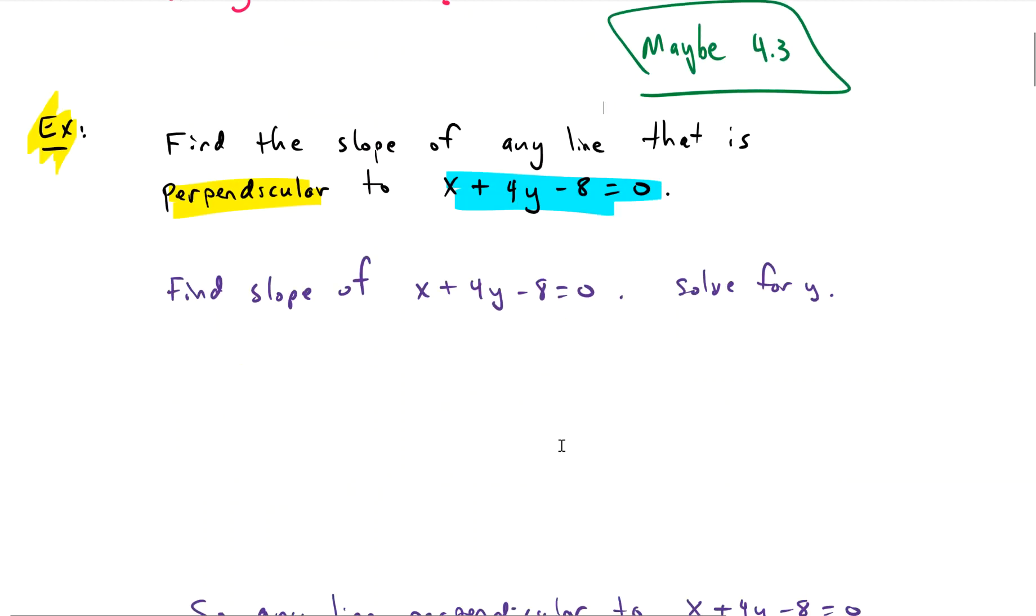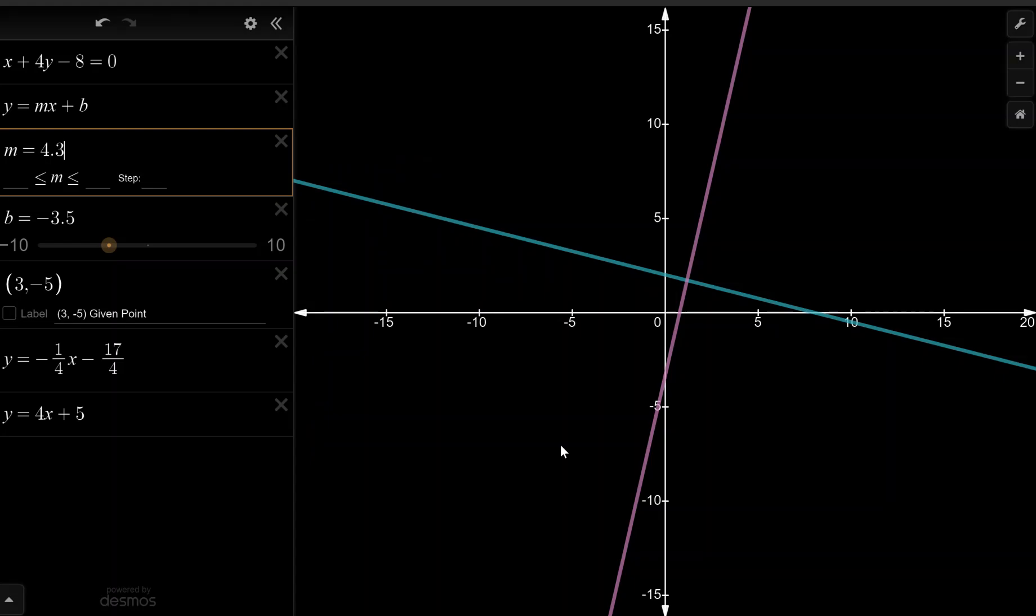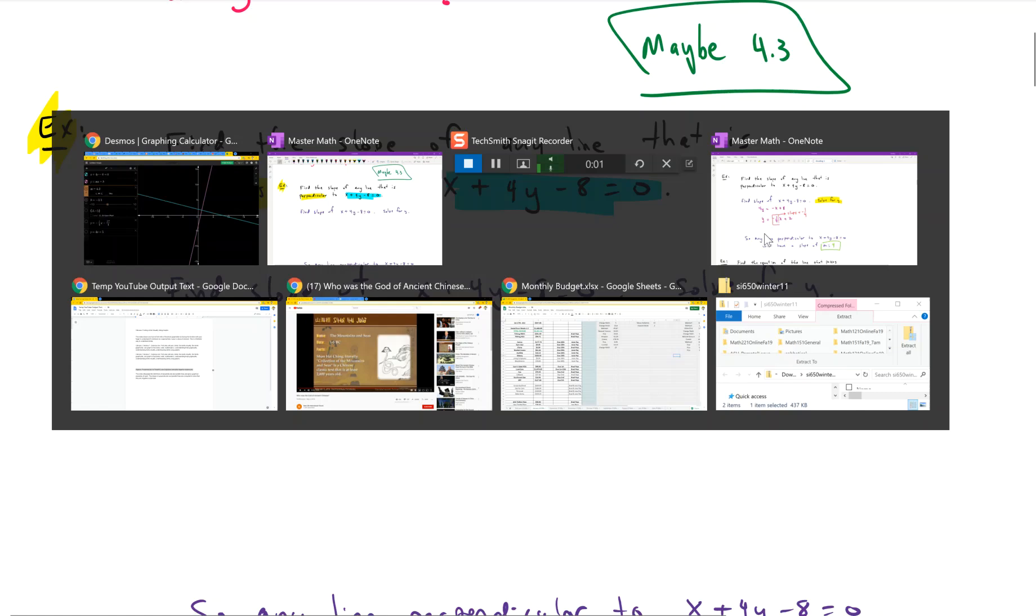Anyway, we can find this algebraically. We don't have to just guess. I just showed you the picture because I want you to see what it looks like so you can envision. We're given the blue line and we want to find the slope of the purple line. That's what we're going for.